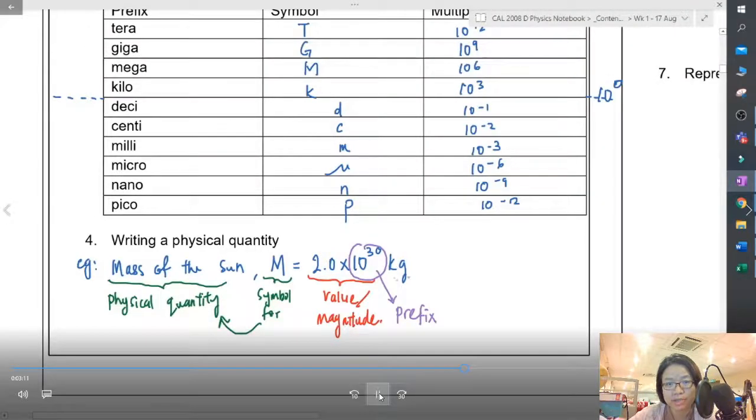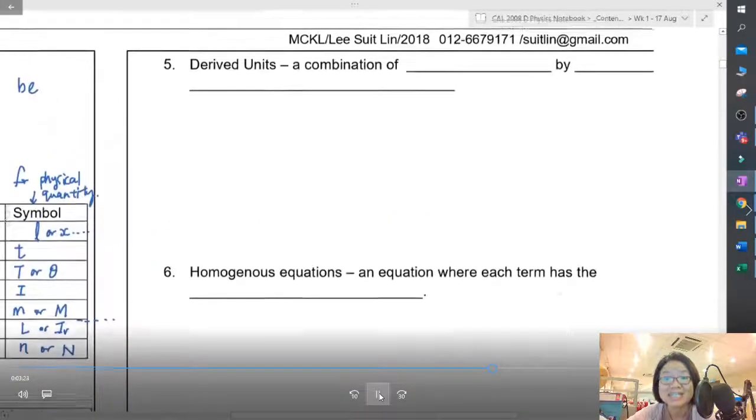Once you define the symbol, you can keep using it. This is the value or magnitude: 2 times 10 to the power of 30, which means it has 30 zeros. This 10 to the power of 3 is a prefix - you can represent it with a prefix symbol or just put 10 to the power of something. This kg here is the symbol for unit. Once again, the symbol for physical quantity is not fixed, but the symbol for unit is fixed.